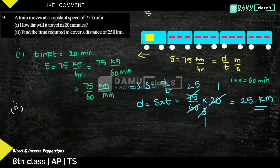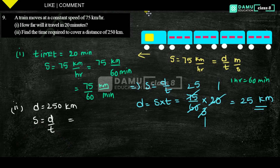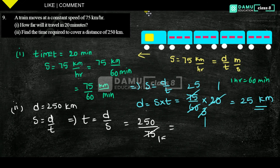The second question: find the time required to cover a distance of 250 km. Using time equals distance divided by speed, time equals 250 km divided by 75 km per hour.